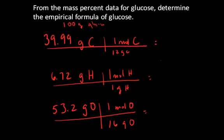From this math, I can determine the number of moles. For carbon, it is 3.32 moles of carbon in that sample. For the hydrogen, it's 6.72 moles of hydrogen. And for the oxygen, it's 3.33 moles of oxygen.